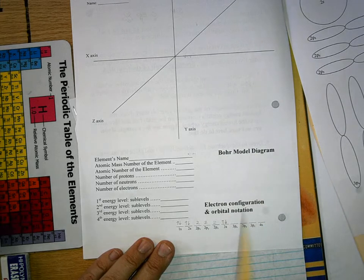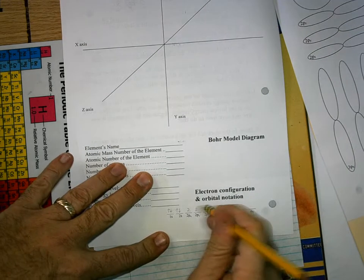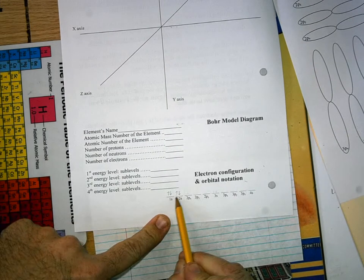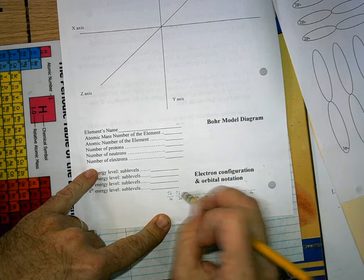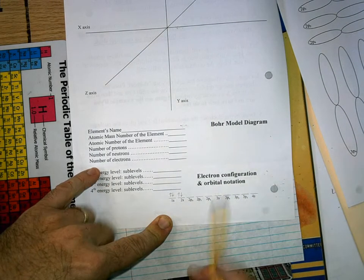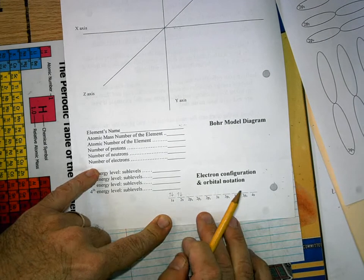You're going to draw a very nice Bohr model of it. Then down here, I'd recommend putting the electron configuration for your element. I'd really like you to do it by putting the arrows on there. Remember, don't get tripped up - a lot of people see 2px, 2py, 2pz and think 'I don't know what that is.'